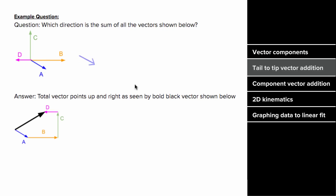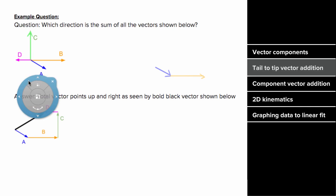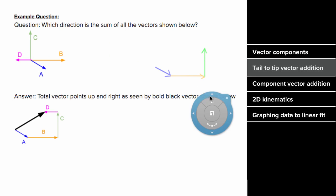I'll take vector a, preserving its direction — I'm not allowed to rotate it or change its size — and add vector b by putting the tail of vector b to the tip of vector a. Then I add vector c by putting the tail of vector c to the tip of vector b, and finally add vector d by putting the tail of vector d to the tip of vector c.